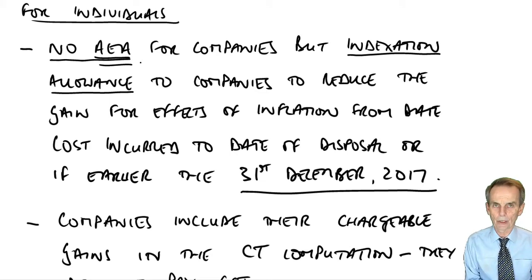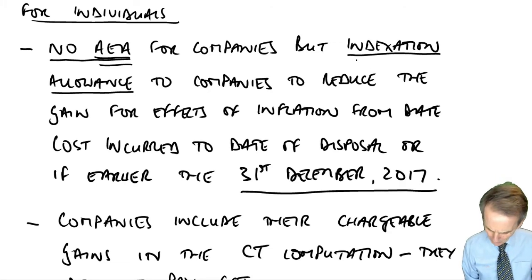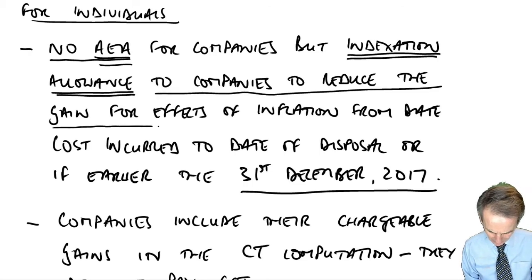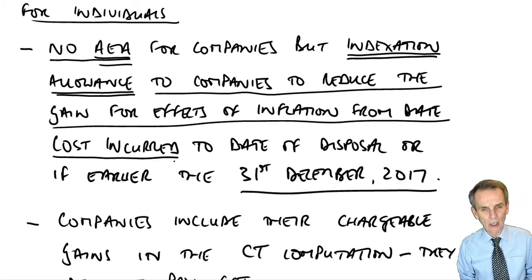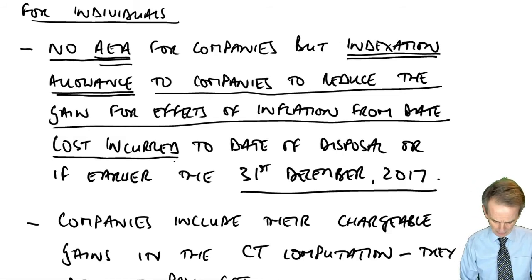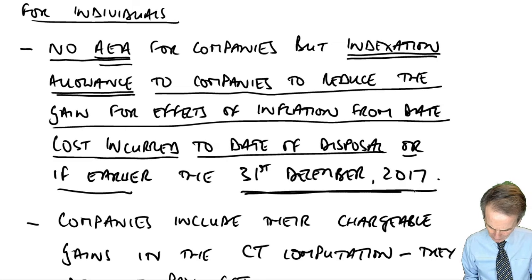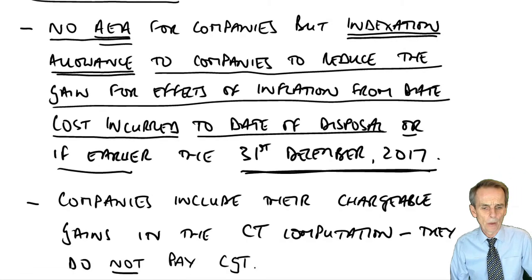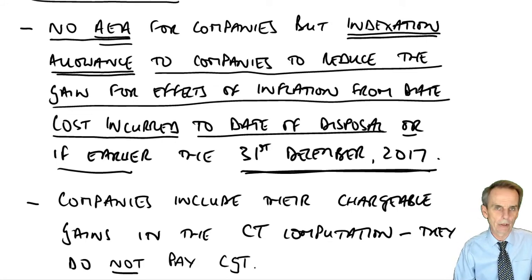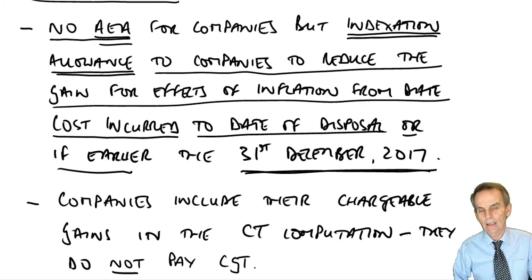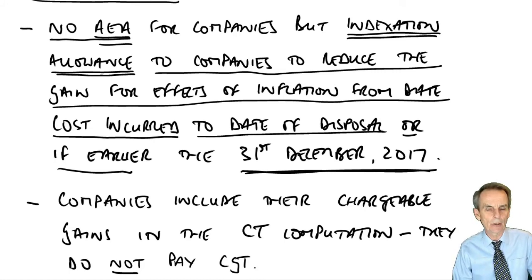That's the bad news for companies. But the good news is that they continue to get something called indexation allowance. That is given to companies to reduce the gains for the effects of inflation, from the date when they incurred the cost — when they bought that particular chargeable asset — through to what would otherwise have been the date of disposal, but if earlier, the 31st of December 2017. We are no doubt going to deal with disposals arising in accounting year ends ending in 2020 or 2021, which will be well past the 31st of December 2017.